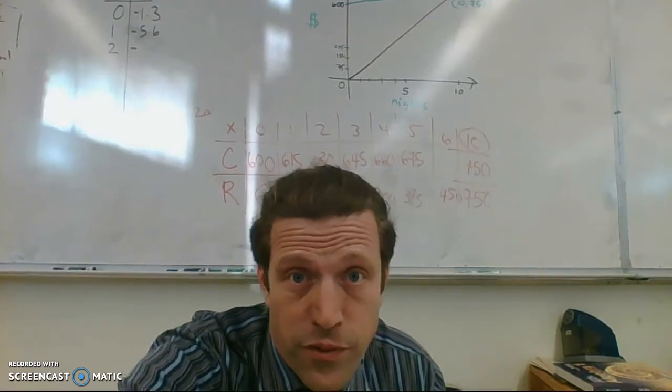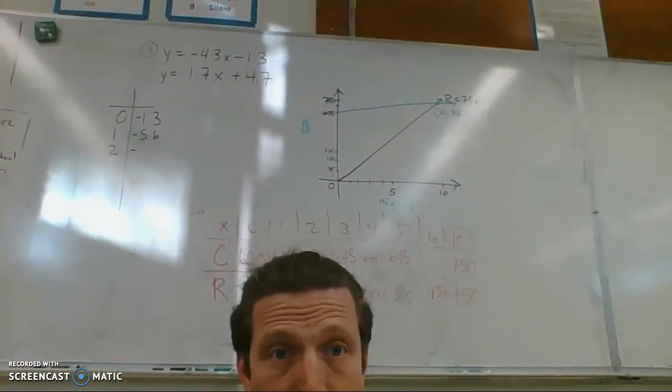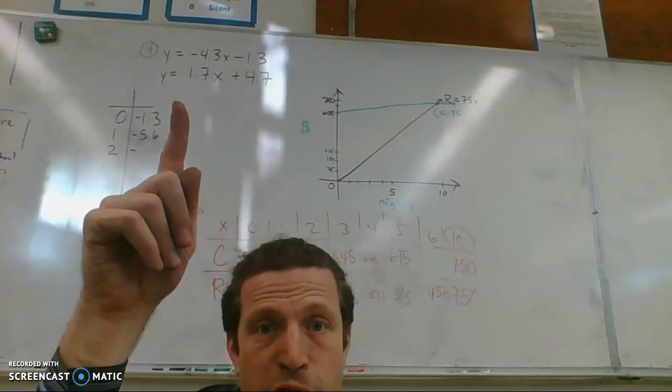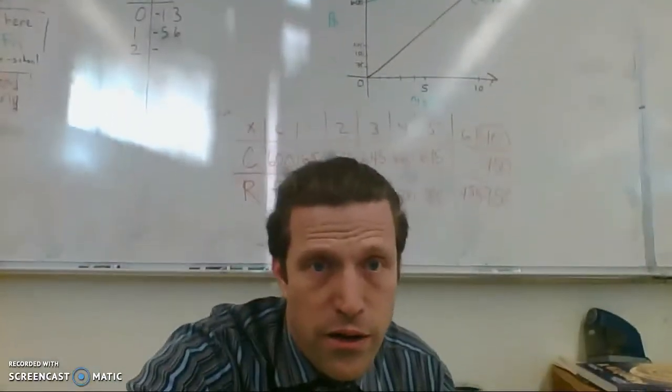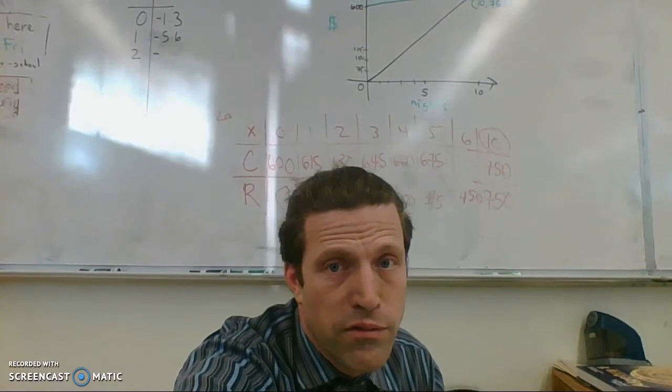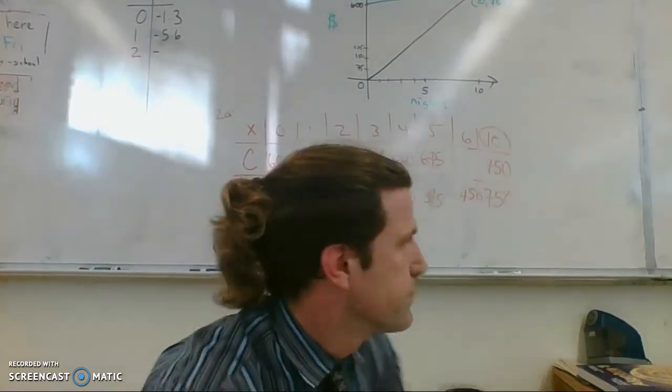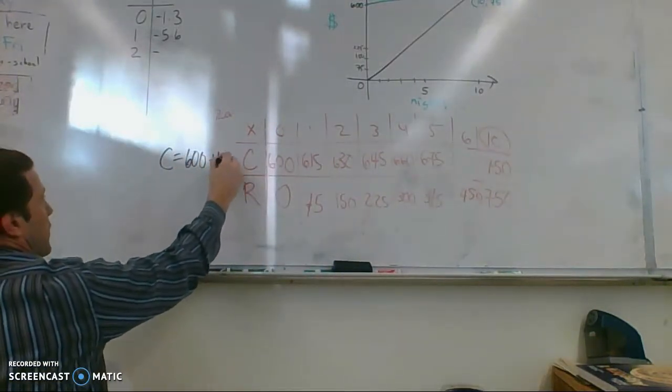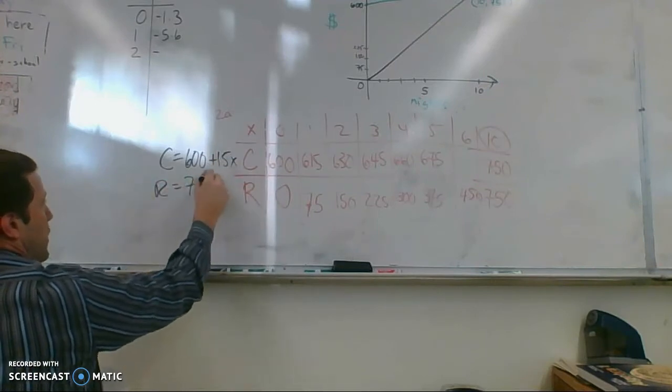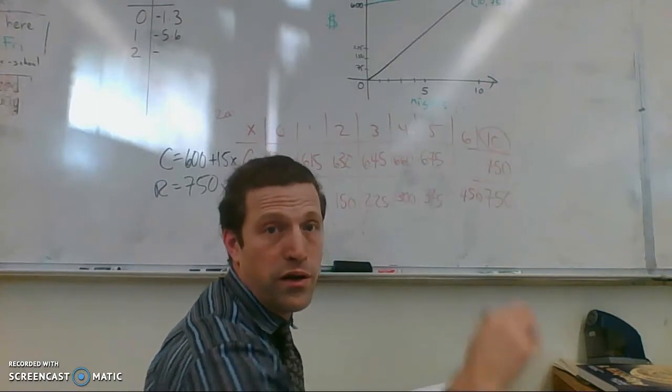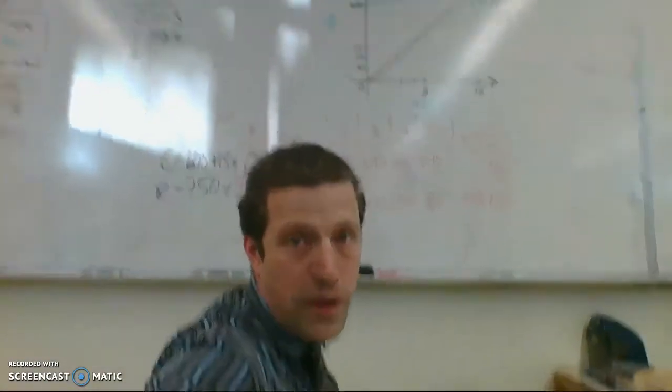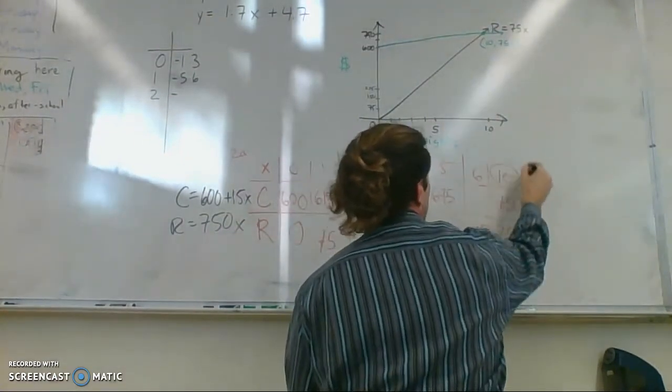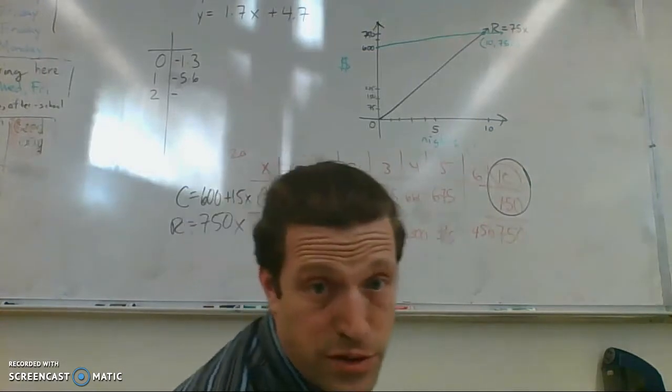An example of a system of linear equations would be the two equations, like up there on the board. Or the first system we looked at, the one where we had C equals 600 plus 15X and R equals 75X. That was a system. And then its solution was the points that we found up on the graph, where they intersected. So the point 10 comma 750. And it was on the table there also. That was a solution to a system.